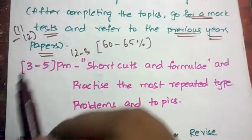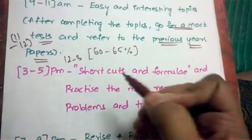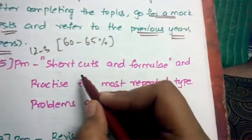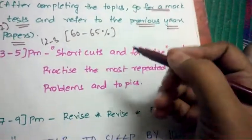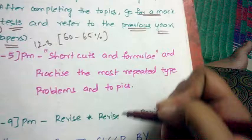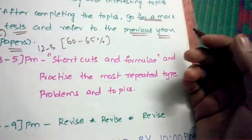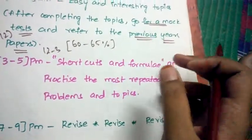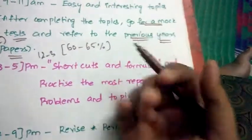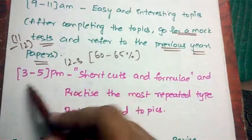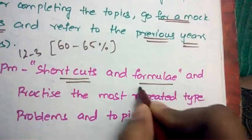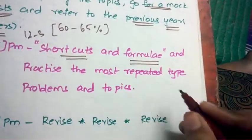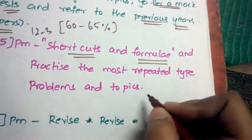Again be back by 3 o'clock. From 3 to 5 in the evening, you need to concentrate on the shortcuts and formulas. What we do is we keep solving problems, but at the end of the day we forget the formula or we forget the shortcut, which will be a mere waste so that we cannot solve the problem at all. So from 3 to 5, start concentrating on the shortcuts and formulas, and practice the most repeated type of problems.